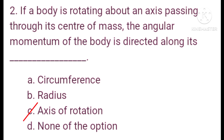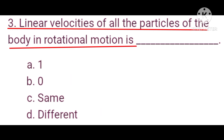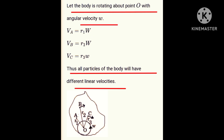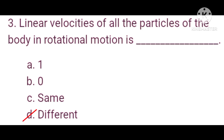Question number three: the linear velocities of all the particles of the body in rotational motion are different. Let the body be rotating about a point O with angular velocity omega. So v_A equals r1·omega, v_B equals r2·omega, and v_C equals r3·omega. Thus all the particles of the body will have different linear velocities. So option D is the correct answer.